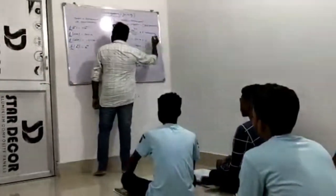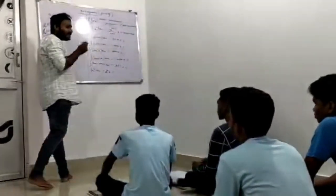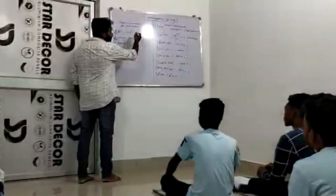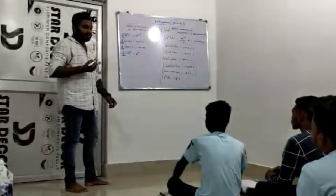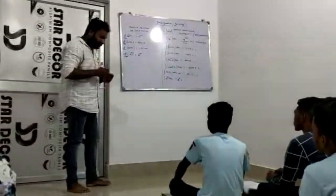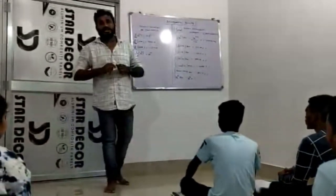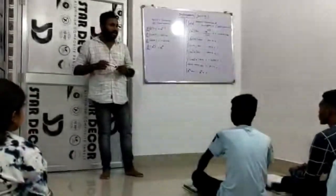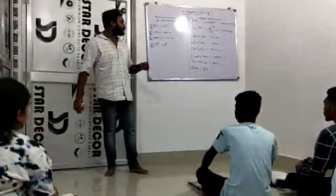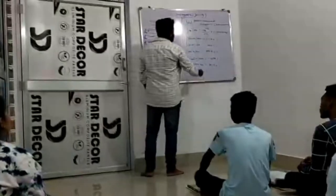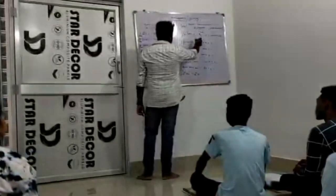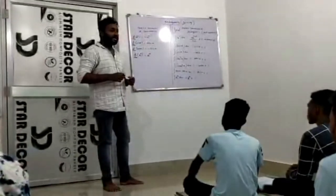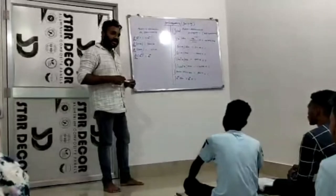The derivative of x to the power n is equal to n into x to the power n minus 1. The basic formula of derivative is n into x to the power n minus 1, but the basic formula of integration is x to the power n plus 1 divided by n plus 1.